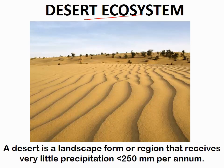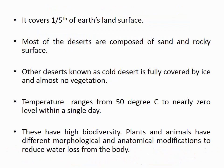First, we have to know what a desert is. A desert is a landscape form or a region that receives very little precipitation — less than 250 millimeters per annum. So we can call a landscape or region a desert when the annual rainfall or annual precipitation rate is less than 250 millimeters.